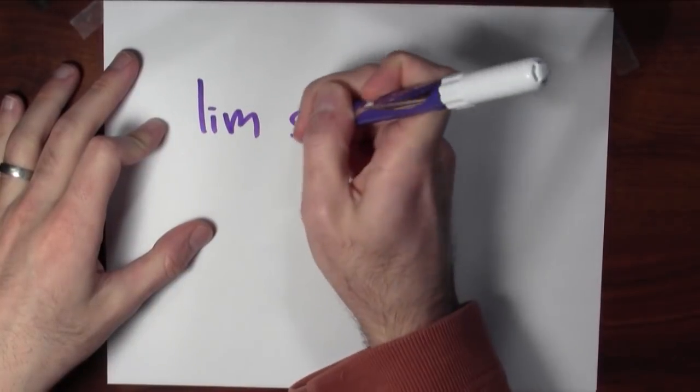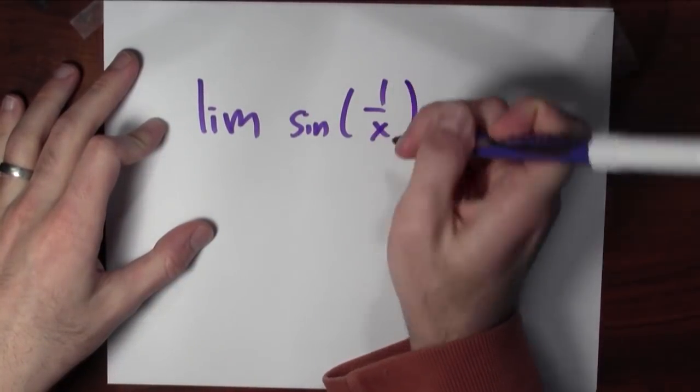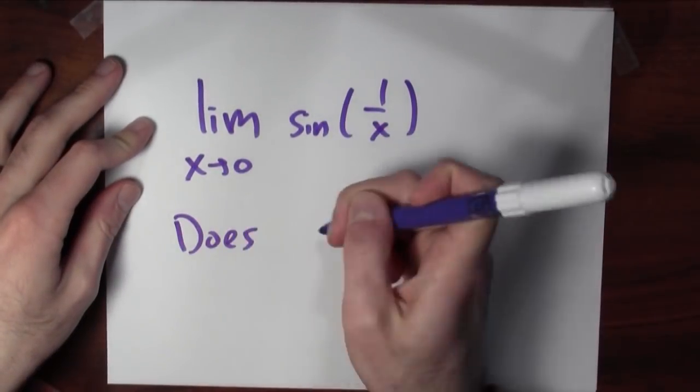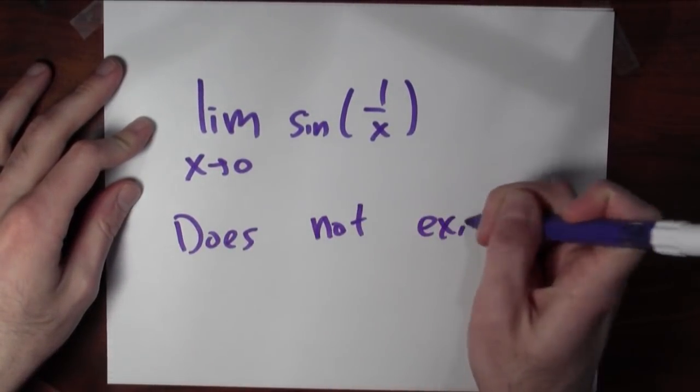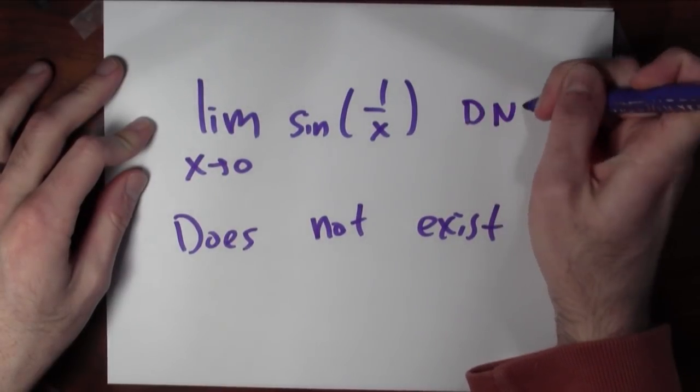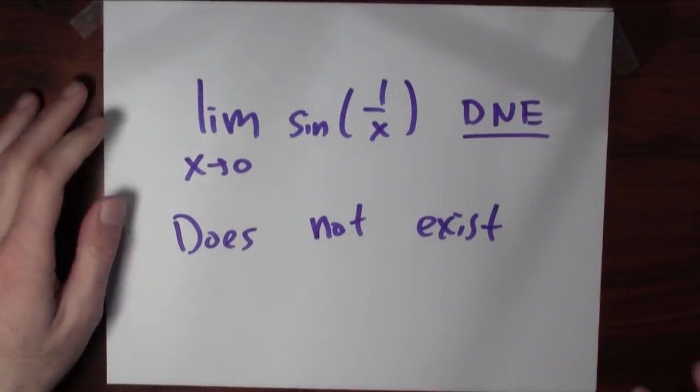Even if your input is very close to zero, your output could be anything between minus 1 and 1. So in light of this evidence, the limit of sine 1 over x as x approaches 0 does not exist, which sometimes I'll abbreviate DNE for does not exist.